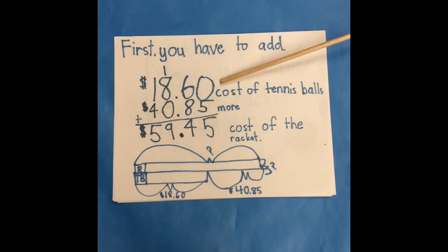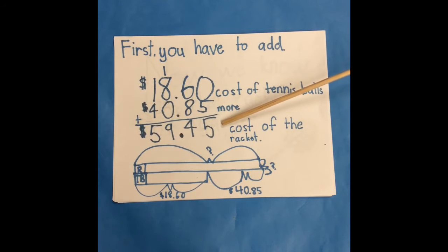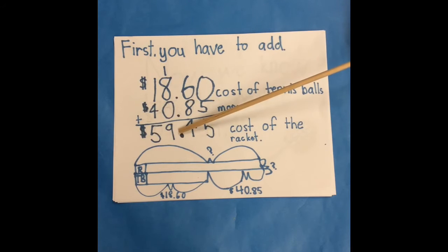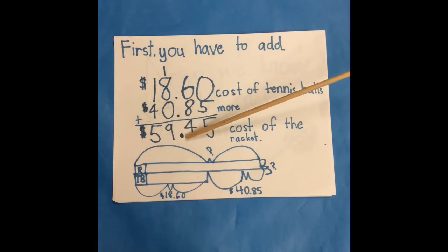$18.60 plus $40.85 equals $59.45. How I solved this is: 0 plus 5 equals 5, 6 plus 8 is 14. You put the 4 below the 8 and regroup the 1 on top of the 8. 1 plus 8 equals 9, 1 plus 4 equals 5. Don't forget to pull down the decimals and the dollar signs.